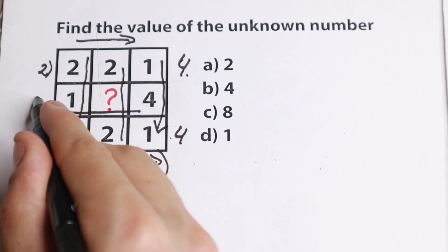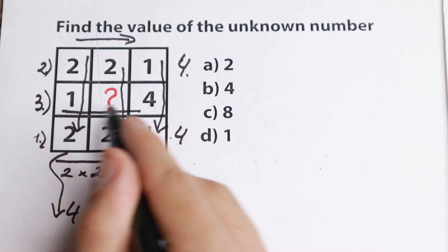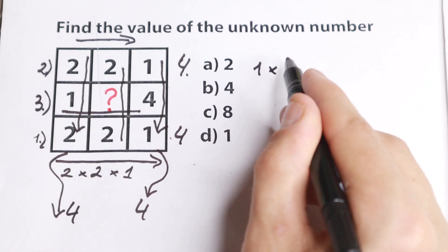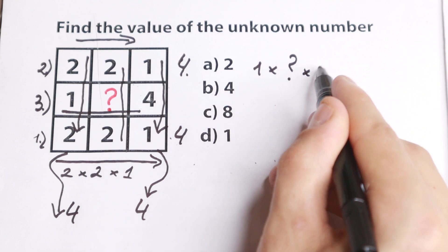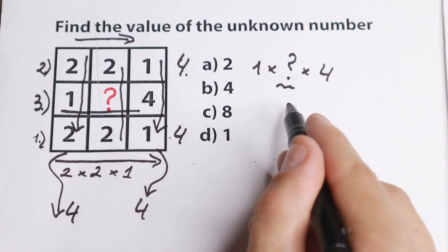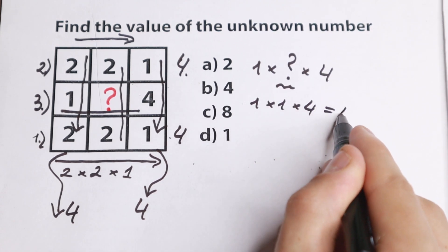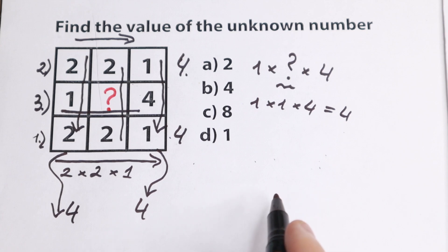Let's go with horizontal at first. So in the middle line we need to have 4. How can we get it? We have 1 times the number we need to find times 4. What number should it be in the middle? Of course 1. We will have 1 times 1 times 4, we will have 4. So it looks like our number is 1.